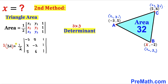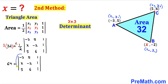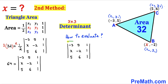Multiplying both sides by 2 to remove the fraction: 2 times 32 gives 64, and the one-half and 2 cancel out, leaving us with just the 3 by 3 determinant on the right-hand side. Now let's focus on evaluating this 3 by 3 determinant step by step.